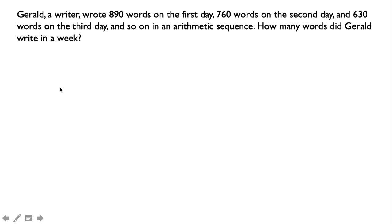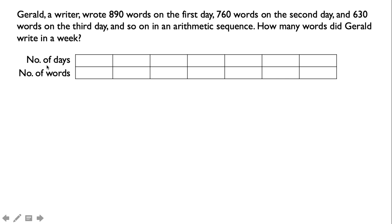In order to solve this problem, let us picture it out using a table. In our first row, we have the number of days: 1, 2, 3, 4, 5, 6, and 7, because that is the number of days in a week. In the second row, we have the number of words. On the first day, Gerald wrote 890 words; on the second day, 760 words; on the third day, 630 words. The rest of the days we leave blank because we don't know those numbers yet.